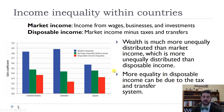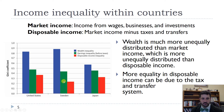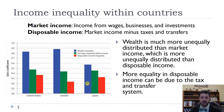Disposable income is market income minus the taxes you pay, plus the transfers you receive — things like unemployment benefits or food stamps. You can see that Sweden reduces its inequality between market income and disposable income the most. Disposable income inequality is lower in the United States than market income inequality, but it's still higher than in both Sweden and Japan.